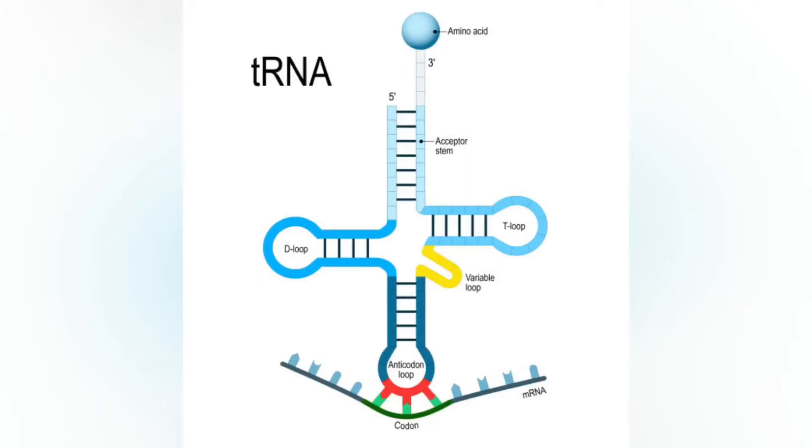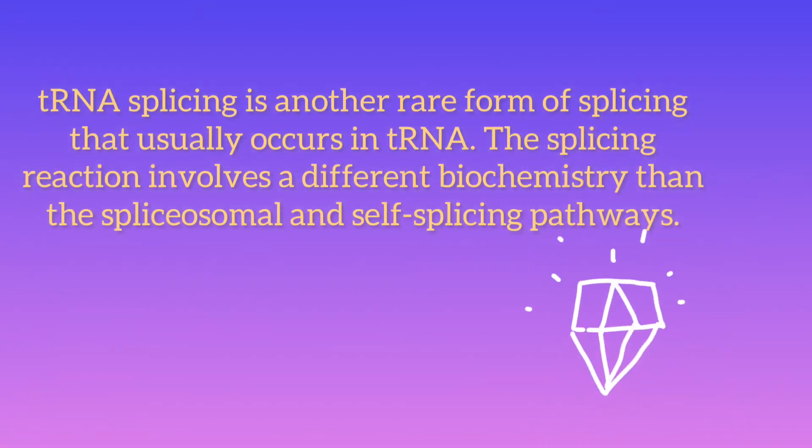This cleavage forms a 5-half tRNA terminating at a 2,3-cyclic phosphodiester group, and a 3-half tRNA terminating at a 5-hydroxyl group, along with a discarded intron.